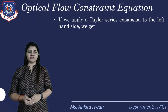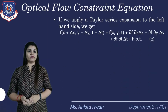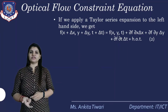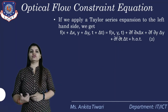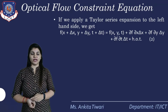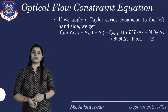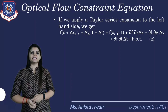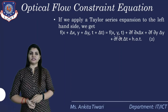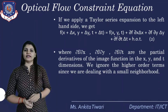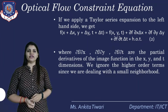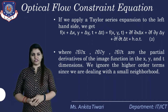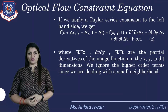If we apply a Taylor series expansion to the left-hand side, we get: f(x + Δx, y + Δy, t + Δt) = f(x, y, t) + (df/dx)·Δx + (df/dy)·Δy + (df/dt)·Δt + higher order terms (HOT), where df/dx, df/dy, and df/dt are the partial derivatives of the image function in the x, y, and t dimensions.